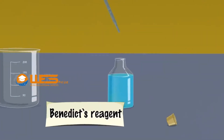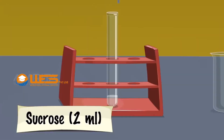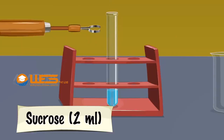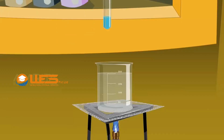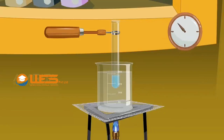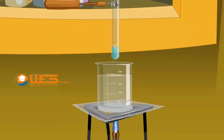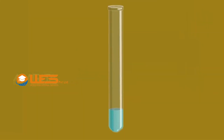Sucrose. Take 2 ml of Benedict's reagent in a dropper. Add it to 2 ml aqueous solution of sucrose taken in a test tube. The colour of the solution turns blue. Take the test tube using a test tube holder. Place it in a boiling water bath and heat for a few minutes. The colour remains the same. The test is negative, indicating that sucrose is a non-reducing sugar.